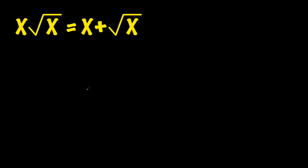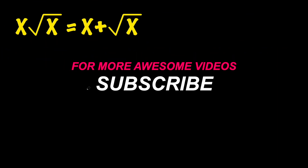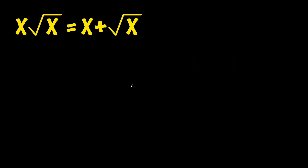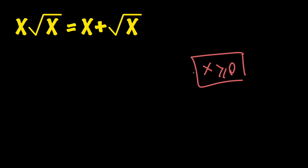But before we do that, hit the subscribe button for more awesome videos. So first of all, notice that x is under the square root, which means that x must be something non-negative. And this is the only condition that we have for our equation.